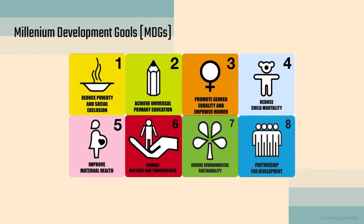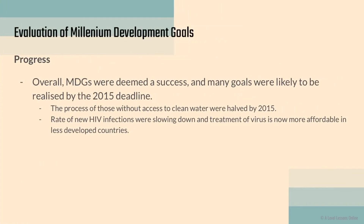From these titles we can roughly infer what each goal is trying to get at. Within each goal there are sub-goals — for instance, ensuring environmental sustainability has sub-goals 7.1, 7.2, 7.3, and 7.4, which all set out to ensure that different aspects of environmental sustainability were achieved.